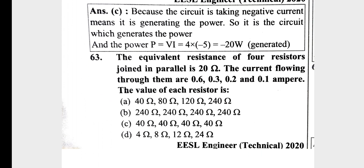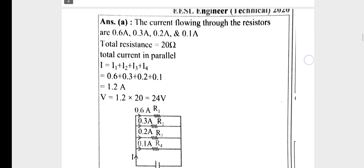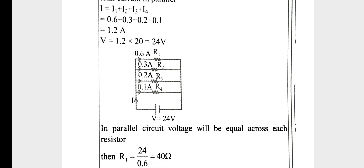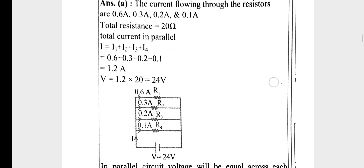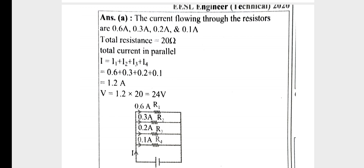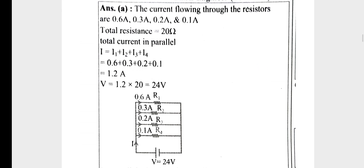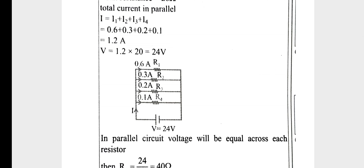Question 3: The equivalent resistance of 4 resistors joined in parallel is 20 Ohm. The total resistance R equals 20 Ohm. The value of each resistor is to be determined from this.